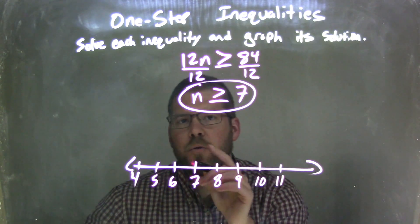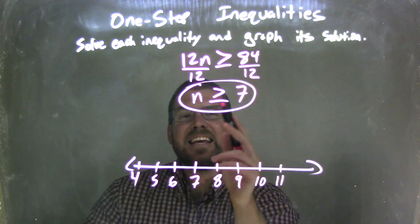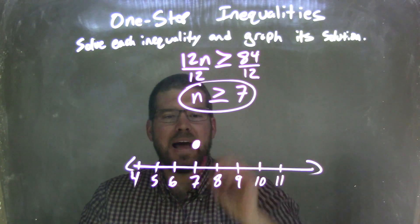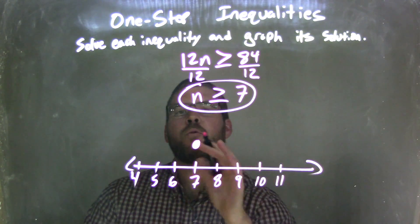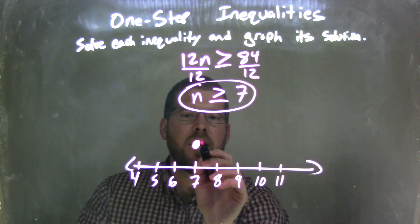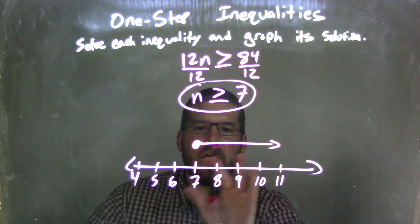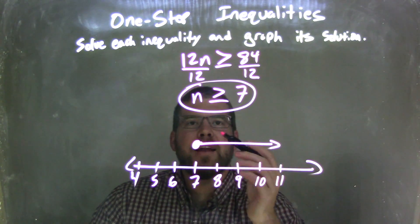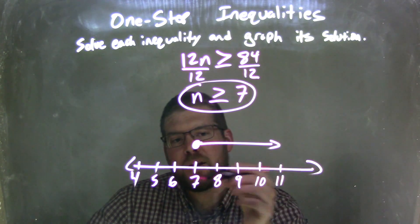So now I need to graph this. Since n can equal 7, I need a closed circle at 7. Then n is greater than 7, so I make my arrow to the right, all the values where n is greater than 7. So now I have n is greater than or equal to 7 represented in the graph.